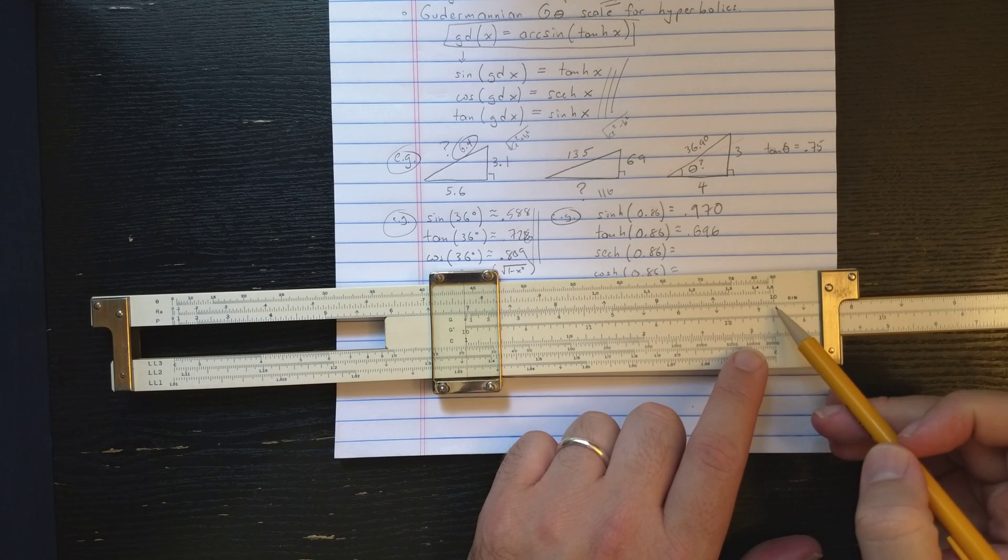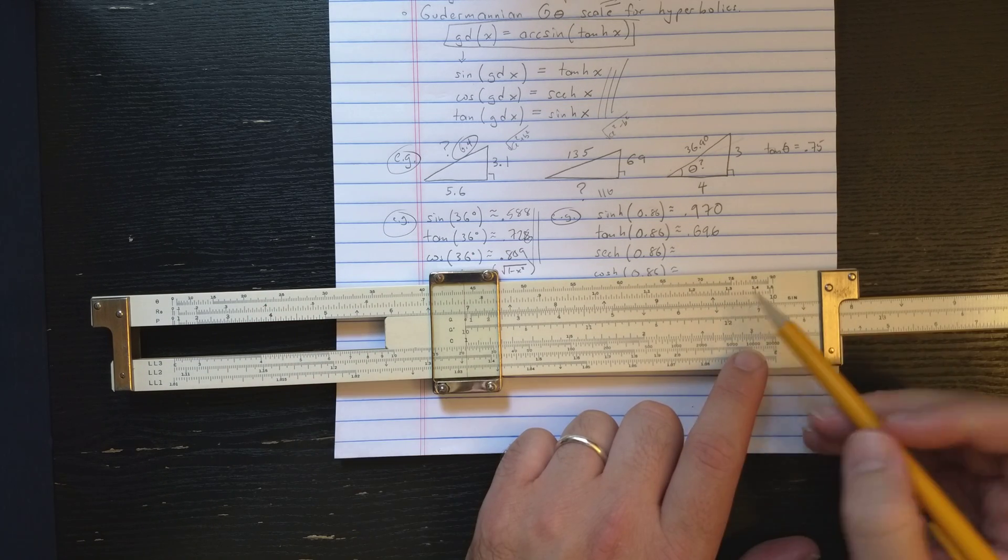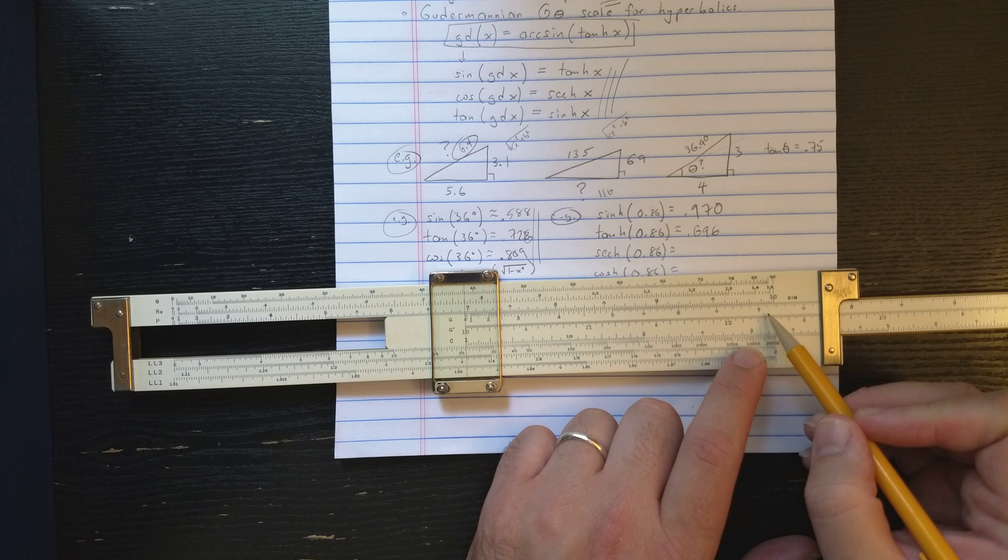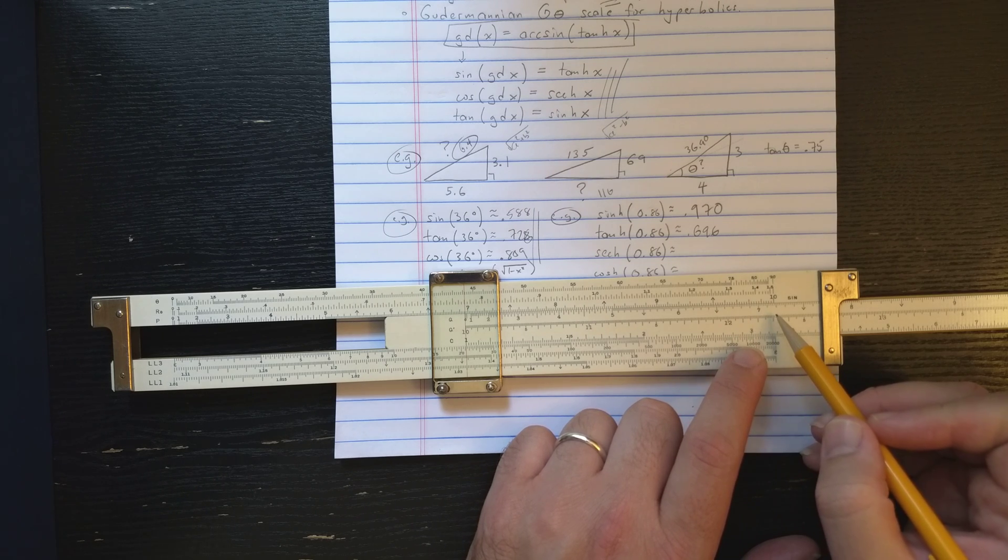Then find the index of the Q scale and read the results out here. And it could be the other side if you're using the other index. And so here, if you do this using the hyperbolic function, you get the 0.7718, it looks like.